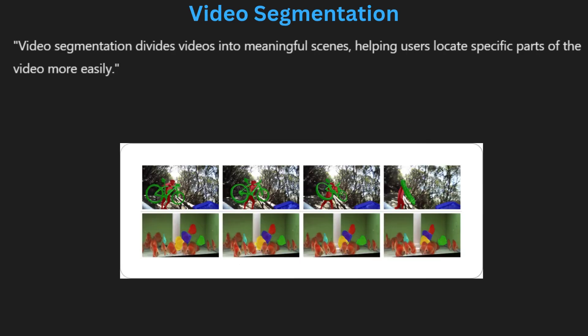Video segmentation refers to dividing a video into meaningful sections or scenes for easier navigation and retrieval. This is done by identifying scene transitions, significant changes in content or audio cues. Segmentation is widely used in video editing, multimedia databases and digital libraries. For instance, an action scene in a movie can be segmented out from dialogue scenes for quick retrieval. Segmentation techniques help manage large video files, allowing users to focus on specific parts of interest without watching the entire video.